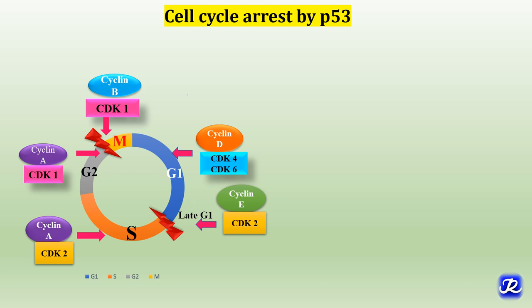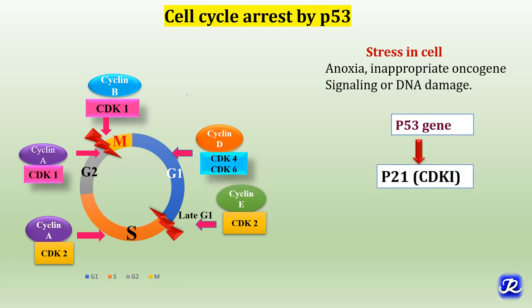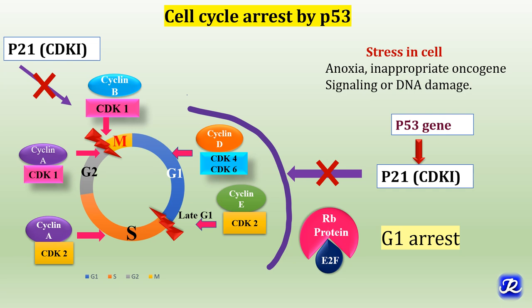P53-mediated cell cycle arrest occurs late in the G1 phase. Whenever there is anoxia, inappropriate oncogene signaling, or DNA damage, increased activity of P53 results in transcription of CDK inhibitor P21. This P21 inhibits the activity of cyclin D CDK complexes in G1 phase, and this inactivation means the cyclin D CDK complexes cannot phosphorylate RB protein, resulting in G1 arrest. Likewise, P21 CDK inhibitor also inhibits the cyclin D CDK1 complex, causing G2 arrest.